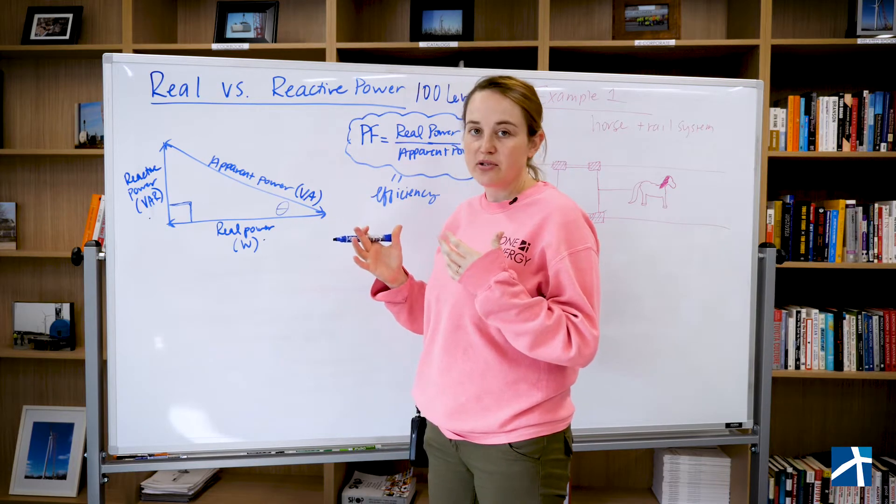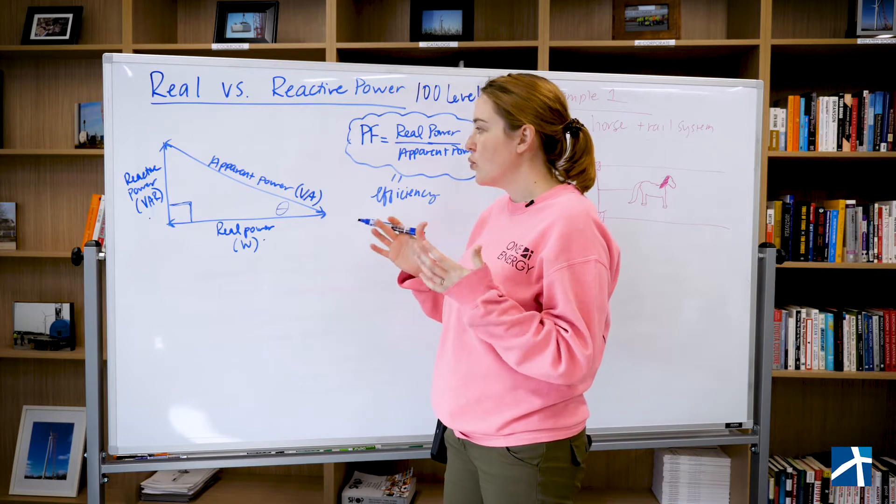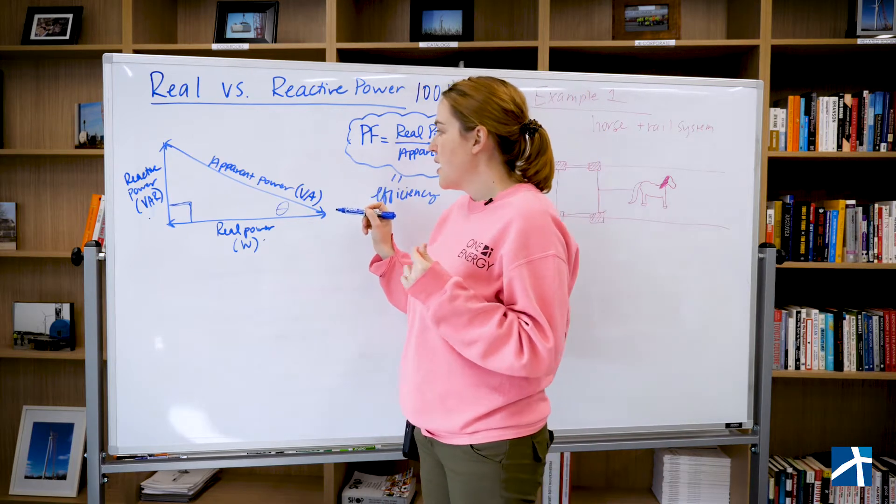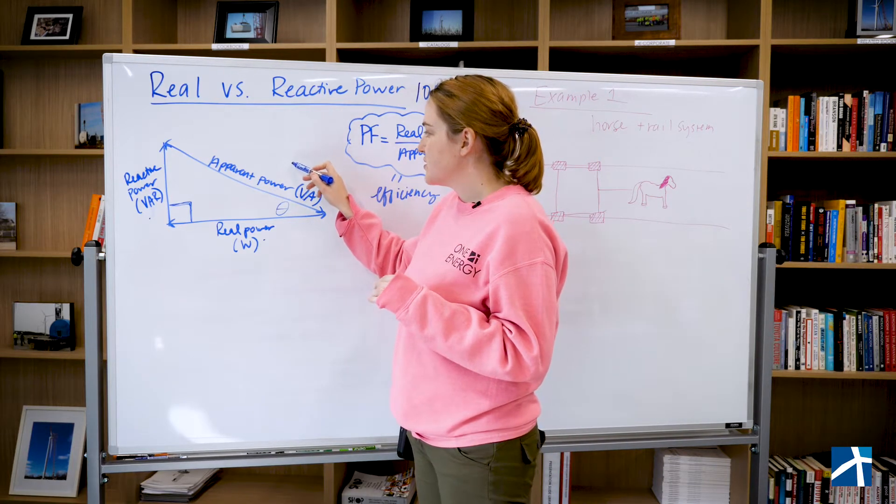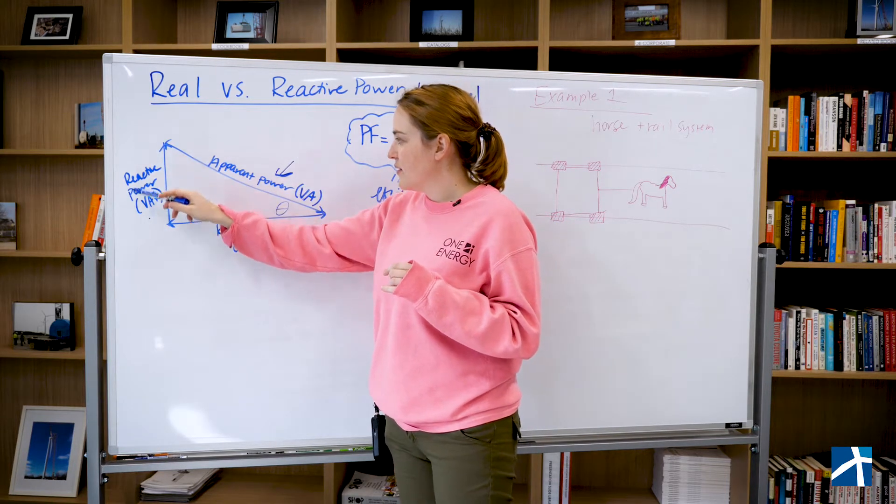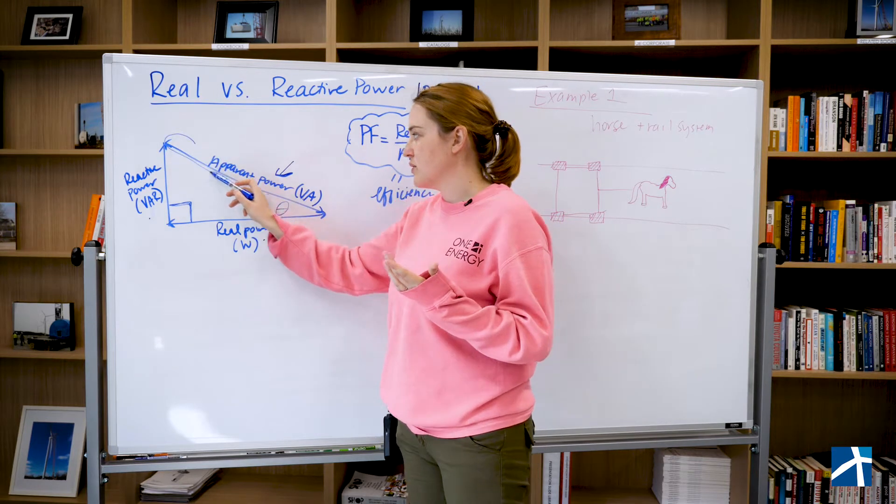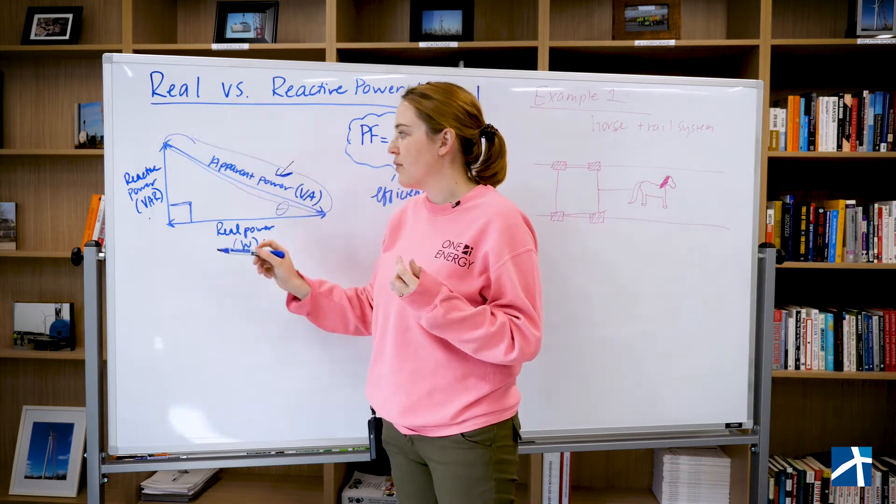You can use trigonometry to solve for one another. This is your summation vector of reactive and real power. These are the two types of power that give you what the utility is going to be billing you for, which is your apparent power.